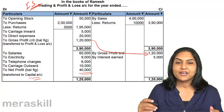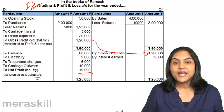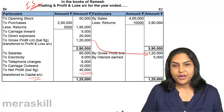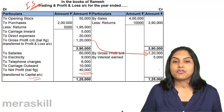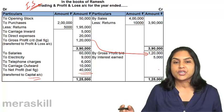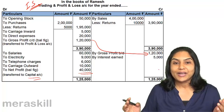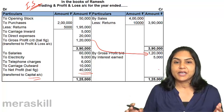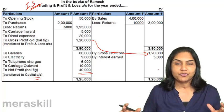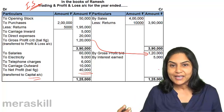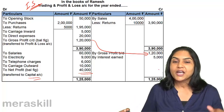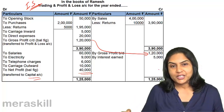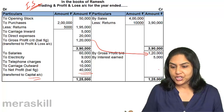Net profit is ultimately transferred to the capital account. Net profit is added to the capital — the capital of the owner will increase, and the net worth of the business will increase when there is a profit. It will reduce if there is a loss.